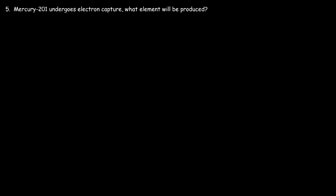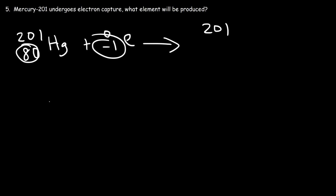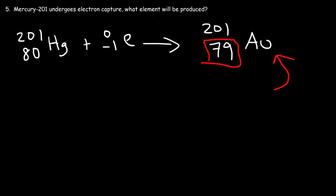Number five: mercury-201 undergoes electron capture. What element will be produced? Mercury has a mass of 201 and an atomic number of 80. During electron capture, the nucleus captures an inner orbital electron, so we put the electron on the left side. The product has mass 201 plus 0 equals 201, and atomic number 80 plus negative one equals 79. Looking to the left of mercury on the periodic table, gold has an atomic number of 79. So gold is the element produced during electron capture.